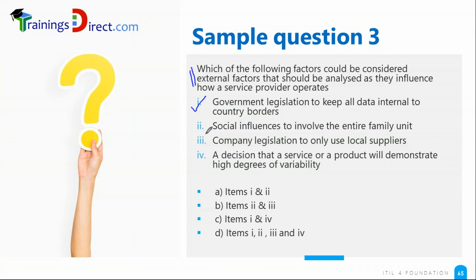Social influences to involve the entire family unit — this is a tricky one. Initially it seems like a no, but if you look at health insurance policies, family health insurance might be popular in the community, so this has to be considered by the service provider. Legislation to use only local suppliers — yes, sometimes the government says use only local suppliers and the provider has to consider that. Then the product variability — if the demand for use of the product is fluctuating, yes, that should be considered. So all of them need to be considered.